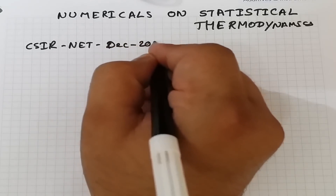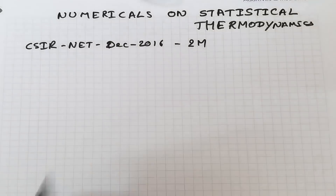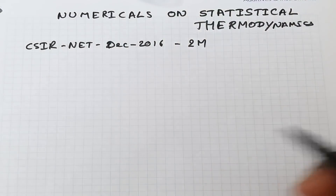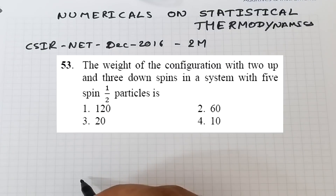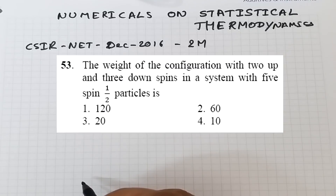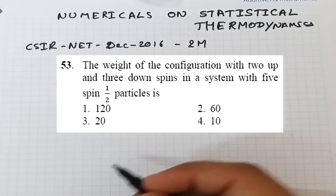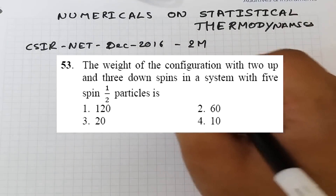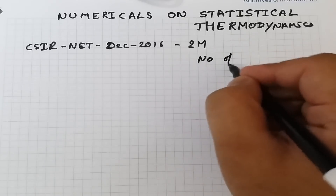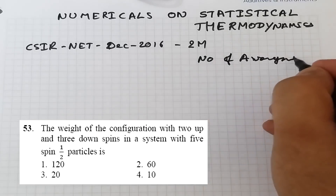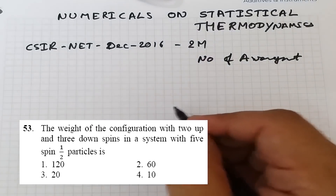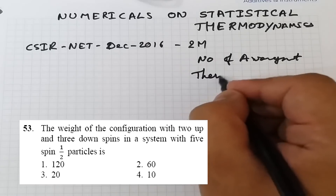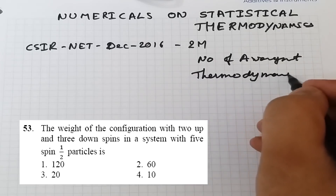The first numerical is from CSIR NET December 2016, asked for two marks. The question says: find the weight of the configuration with two up and three down spins in a system with five spin-half particles. The weight of the configuration simply means the number of arrangements.